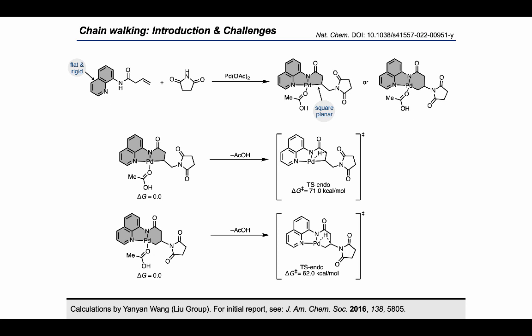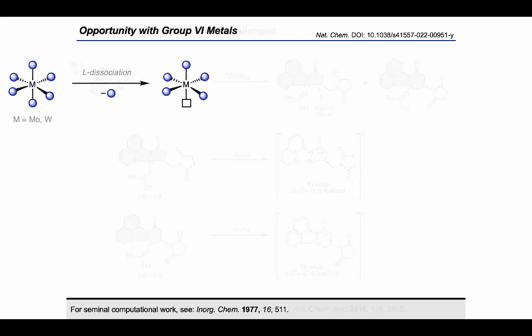Therefore, I knew I would need to use a transition metal that could more readily adopt higher coordination number geometries, as well as design a directing group that would be much more conformationally flexible. This is what turned my attention to the group VI metals, as they exhibit coordination geometries distinct from later transition metals such as rhodium, palladium, and ruthenium.